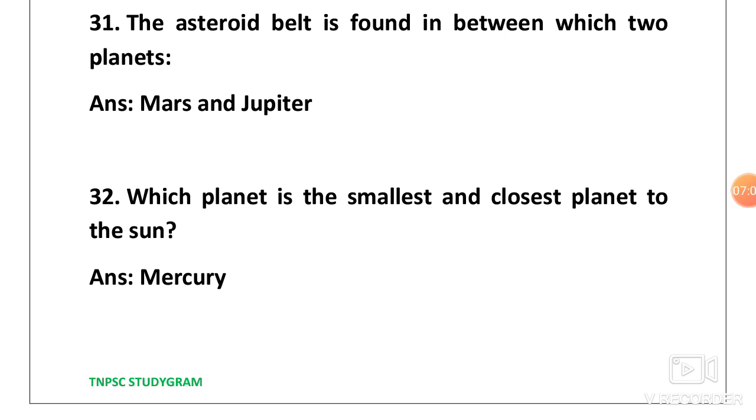Next one, the asteroid belt is found in between which 2 planets? Mars and Jupiter. I will tell you something. Remember this. Remember jam. In traffic, we often use traffic jam. Here asteroid belt is present in which 2 planets? Mars and Jupiter. Jam. J for Jupiter and MA for Mars.